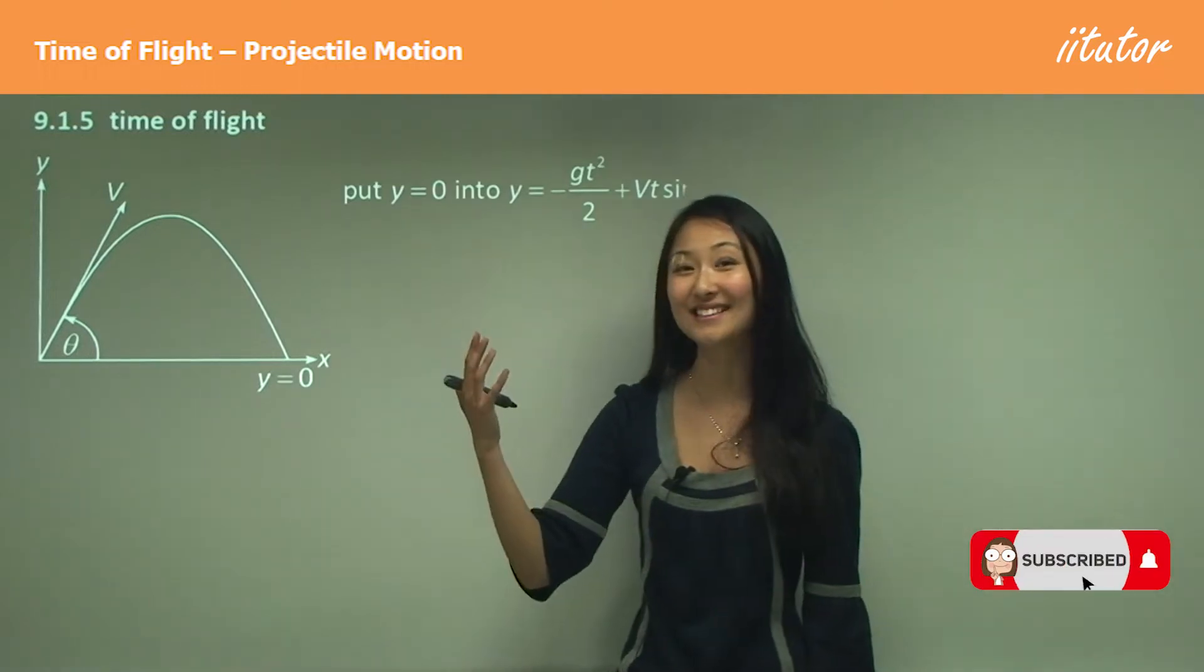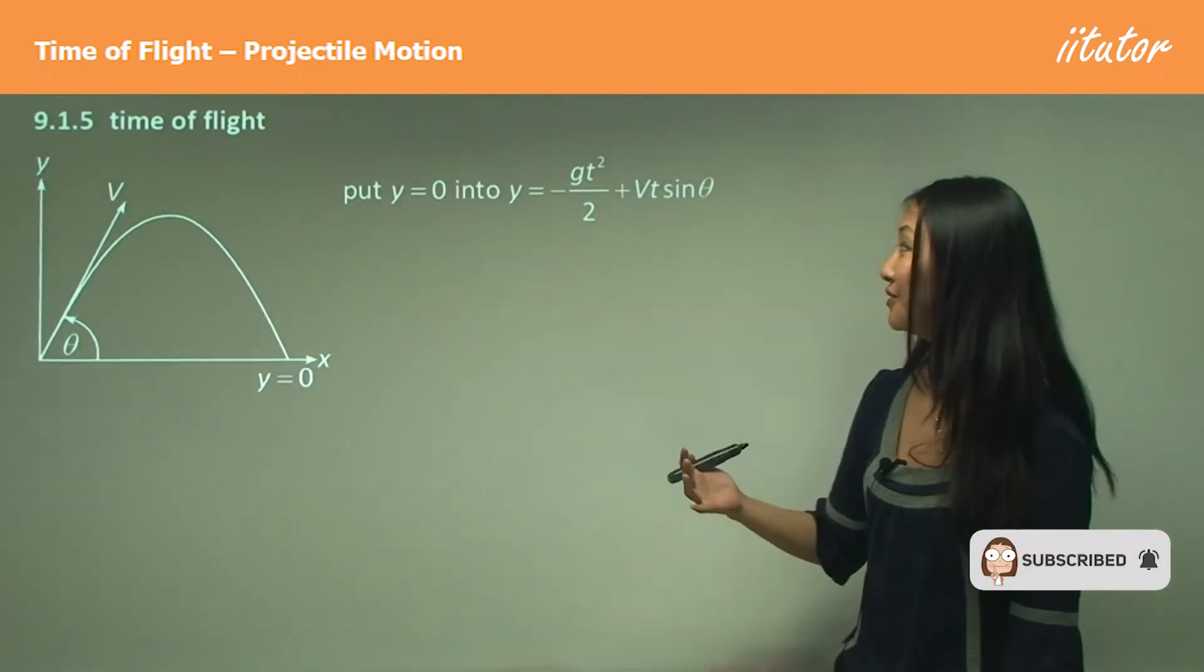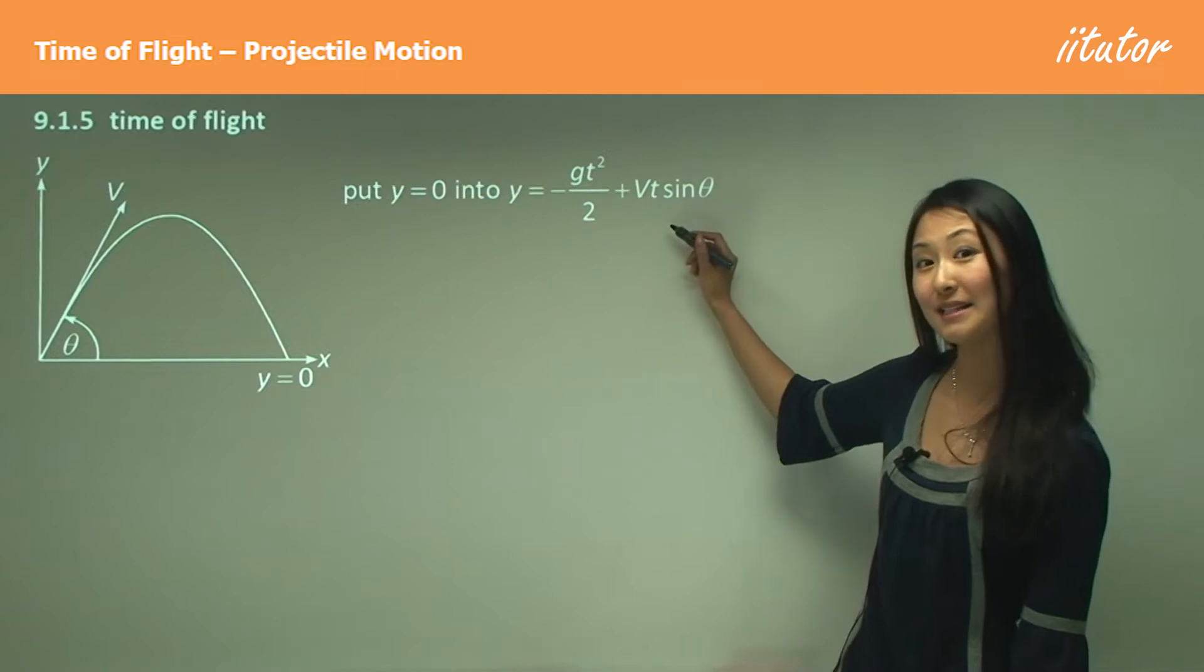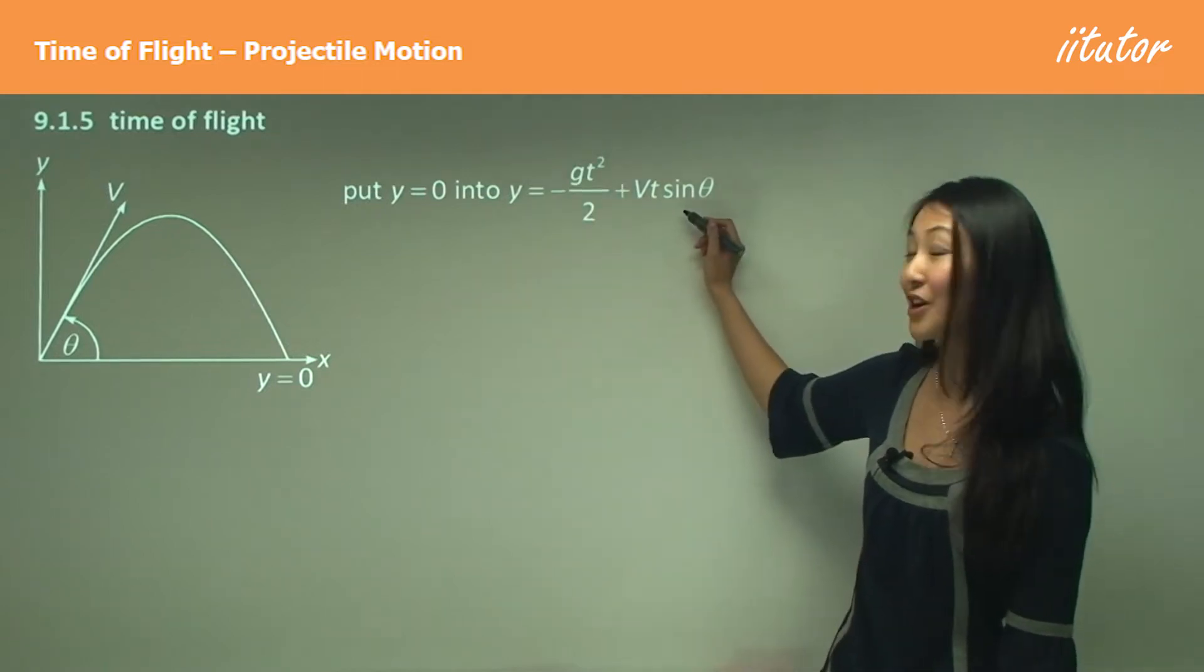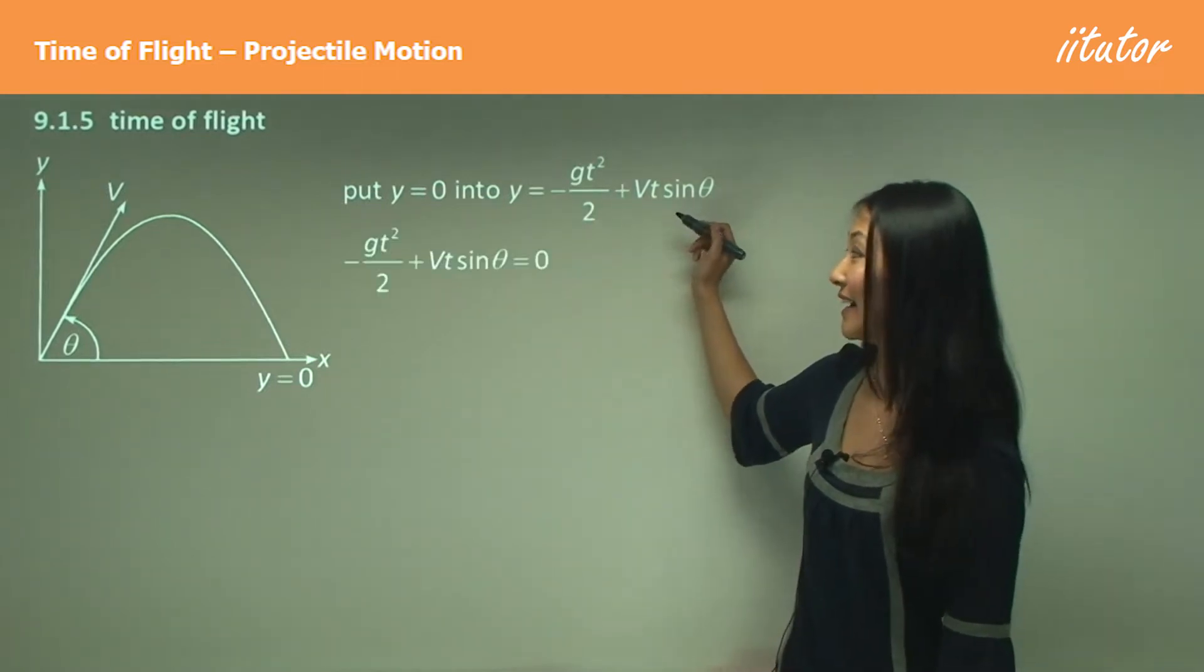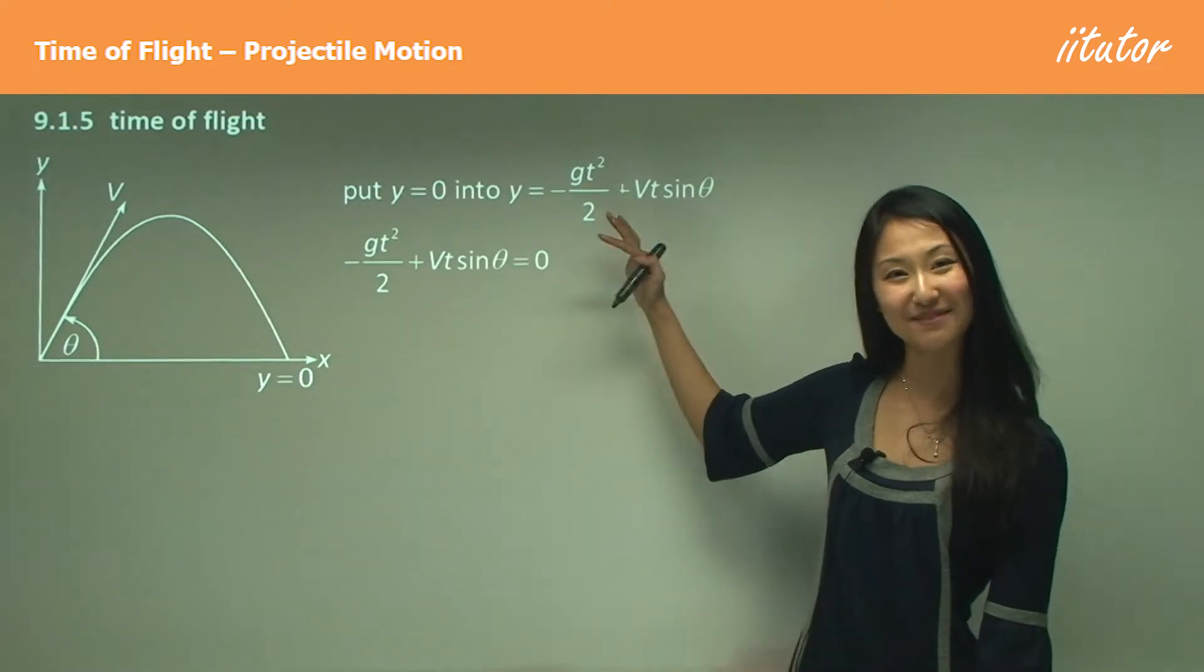So what we need to do is just use our vertical displacement equation, a vertical motion equation here, and make it equal to zero. Quite simple and it makes sense.